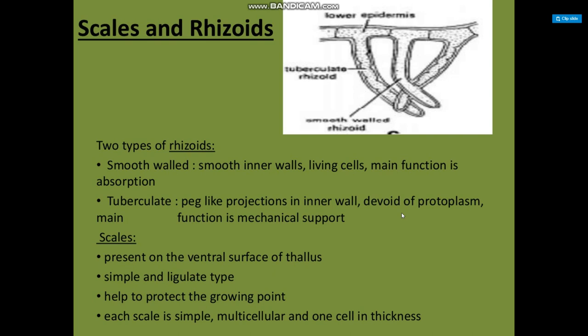Scales are present on the ventral surface of the thallus. They are of simple and ligulate type and help to protect the growing point. Each scale is simple, multicellular, and one cell in thickness.